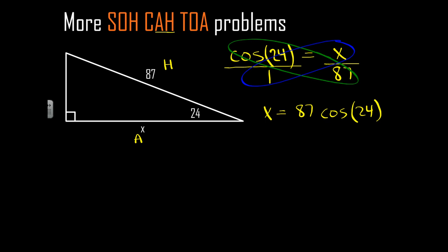You can either look up the cosine of 24 degrees in a table, or most people now would take their calculator and type in 87 cosine 24 degrees. Make sure that you're in degree mode. And 87 times the cosine of 24 degrees is 79.5. So X in this case is 79 and 5 tenths units long.